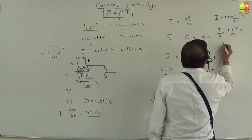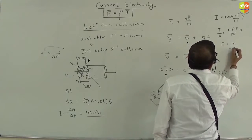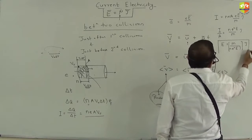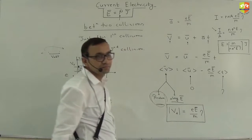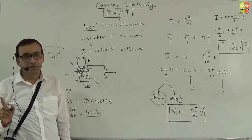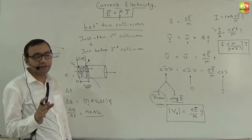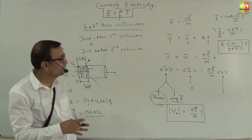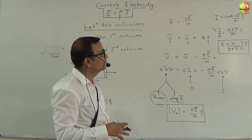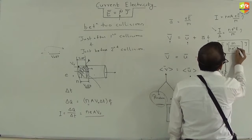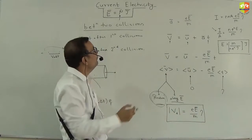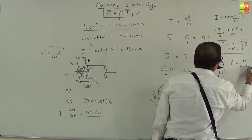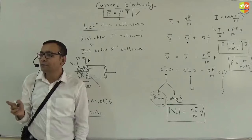Rearranging, we can write E = (m / ne²τ) × J, where J = I/A is current density. Comparing this with E = ρJ, we identify resistivity ρ = m / (ne²τ). This is resistivity expressed in terms of microscopic factors.